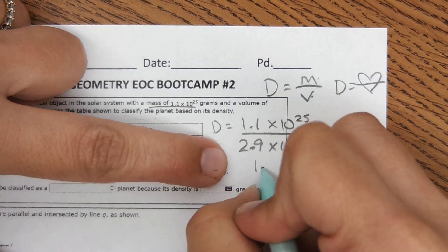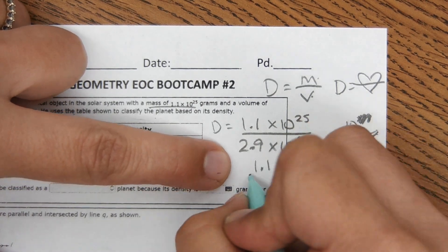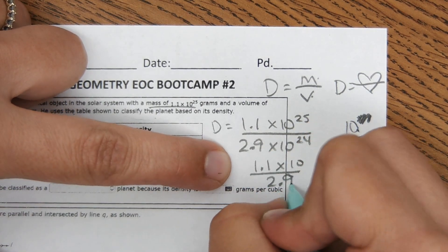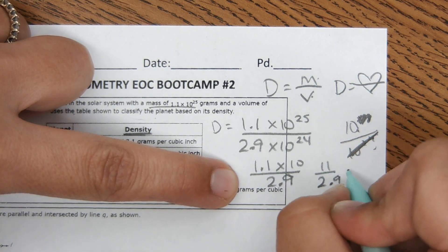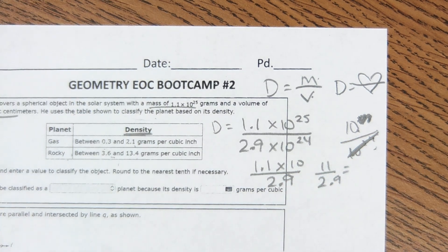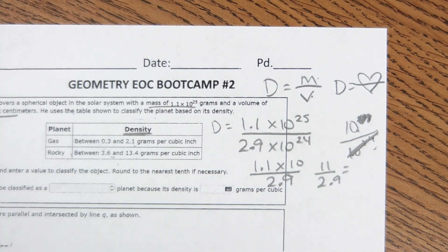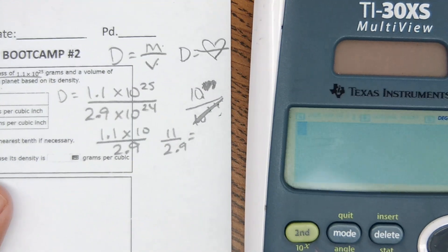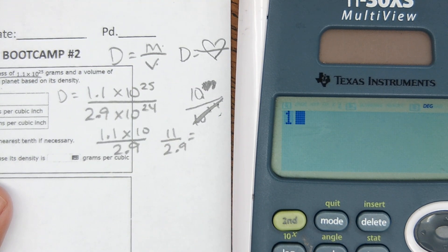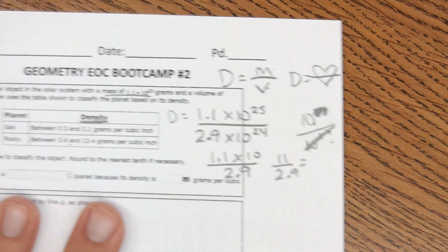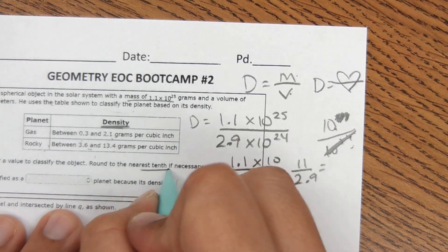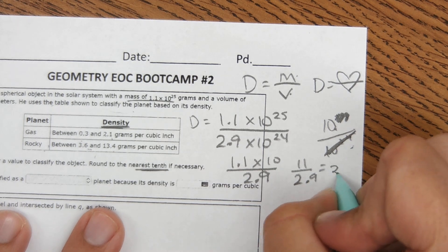So this would be 1.1 times 10 over 2.9. 1.1 times 10 is just 11. 11 divided by 2.9, you do this in a calculator, you get 3.79. It says to round to the nearest tenth, so we'll call that 3.8.